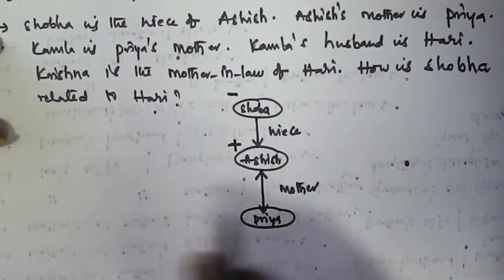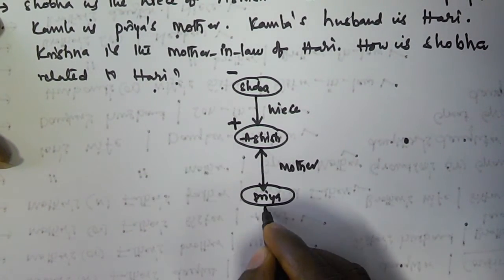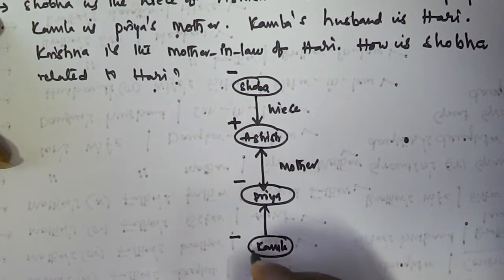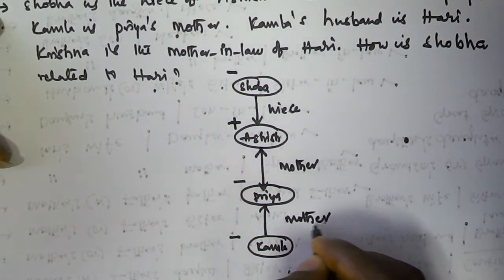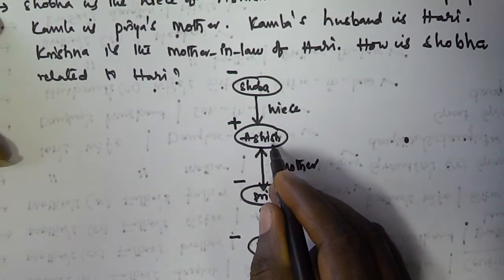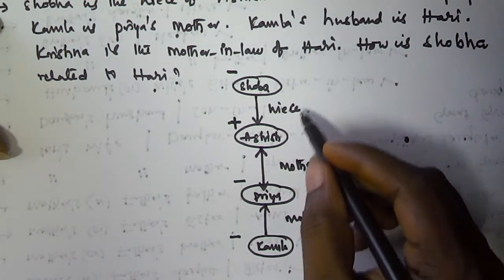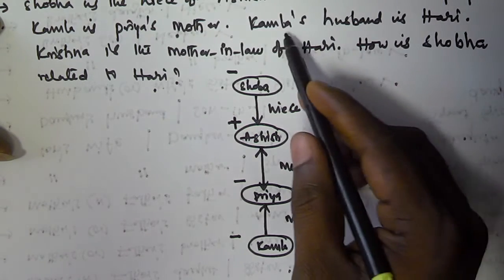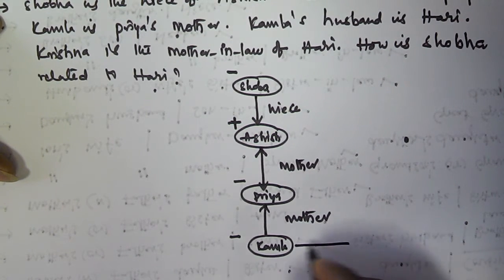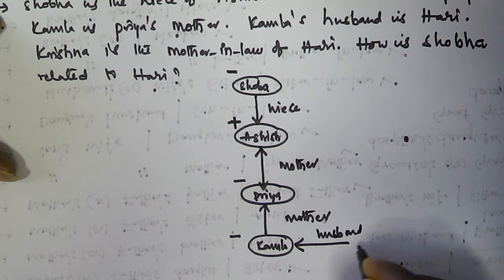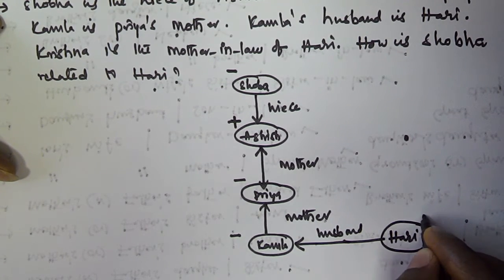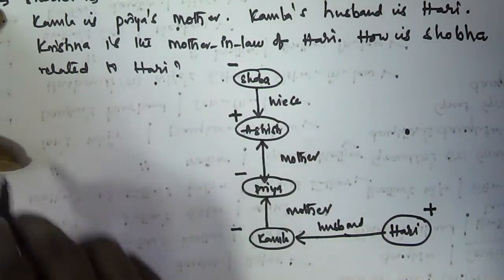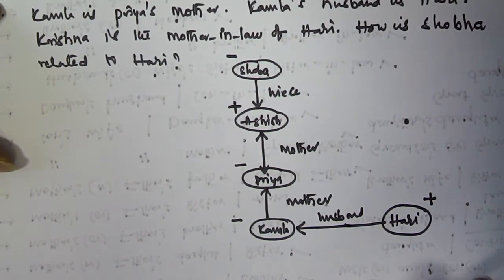Kamala is Priya's mother. Priya is a female and Kamala is also a female. Kamala is the mother of Priya. So: Kamala is the mother of Priya, Priya is the mother of Ashish, and Shobha is the niece of Ashish. Kamala's husband is Hari — Hari is a male, so I am using a positive sign. Hari is the husband of Kamala.